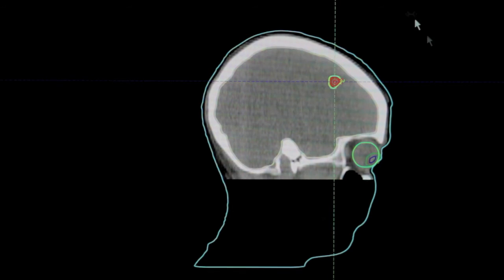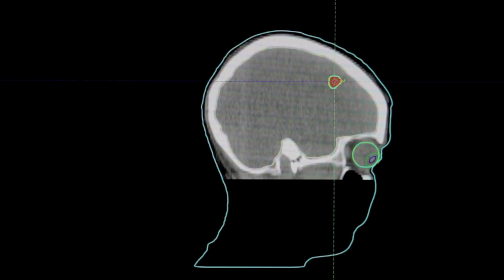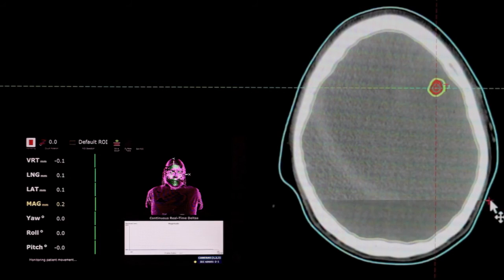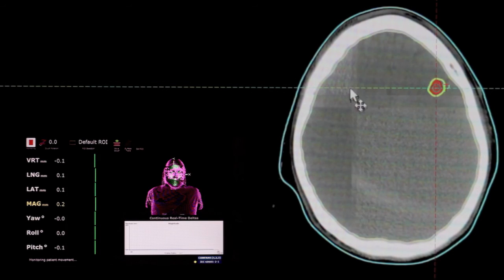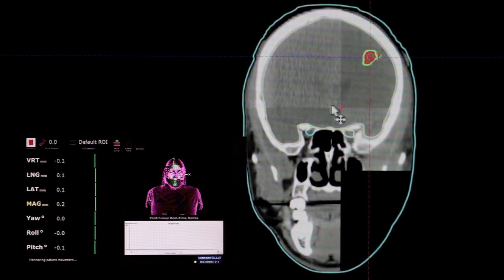During the entire time you are reviewing your imaging, it is important that either you or your fellow therapist, physician, or physicist monitors the AlignRT screen to ensure the patient has not moved. Once you have a good match, you apply the corresponding shifts to the couch.